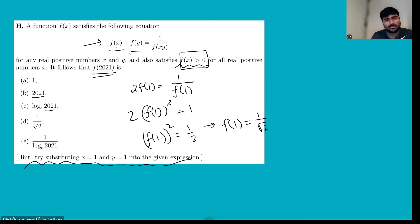If I sub x is 2021 and y is 2021, there wouldn't be much use to that because then I'd get f(2021) squared in the denominator, and I don't know what that is. But what I do know is what f(1) is. It's 1 over root 2. So let me just sub in 2021 and 1 into the equation.